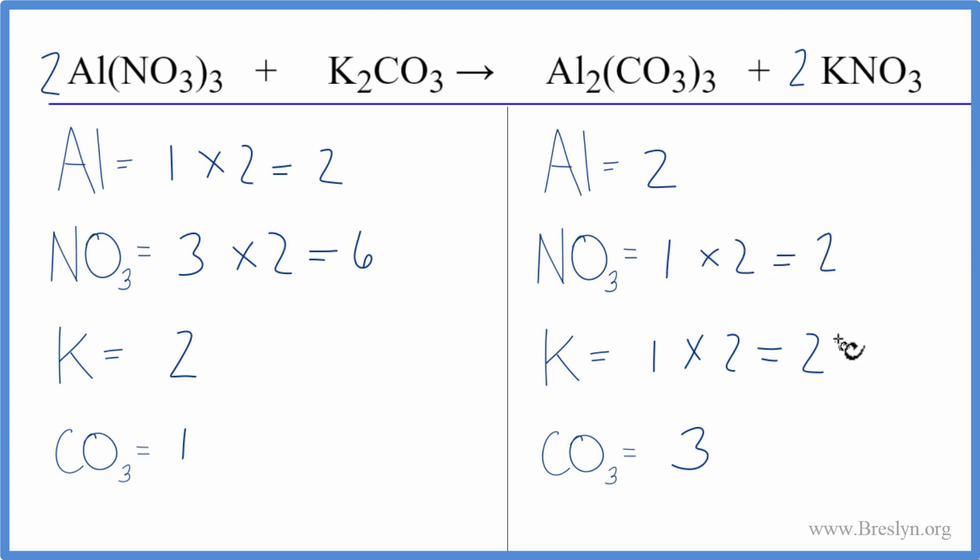Let's do this. Let's balance the carbonates and see what happens. We could put a coefficient of three in front of the K2CO3. We'd have two times three. So now we'd have six potassium atoms. Carbonates, we'd have the one times the three. That'd give us three of those. Those would be balanced.